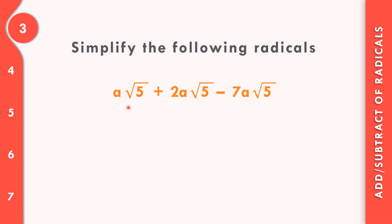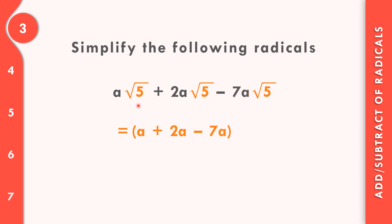In number 3, a square root of 5 plus 2a square root of 5 minus 7a square root of 5. We have the same index and same radical, so we combine: the quantity a plus 2a minus 7a, times square root of 5. 1 plus 2 is 3, minus 7 equals negative 4. So the answer is negative 4a square root of 5.